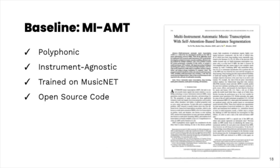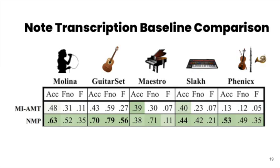As a baseline, we compare with the MIAMT model published in 2020, which is also a polyphonic instrument-agnostic AMT model. This model is trained on MusicNet, which is not part of our training or test set. This table shows the average note event metrics on all test datasets for the baseline algorithm and NMP. The instruments in each test dataset are depicted above each column. We see that for all datasets, NMP outperforms MIAMT, despite being a smaller and simpler model.